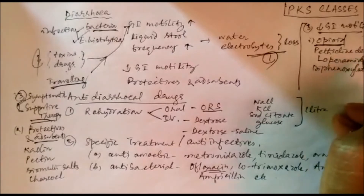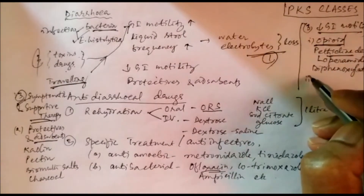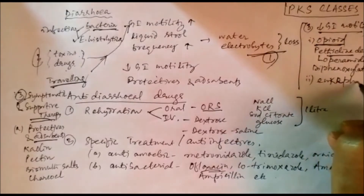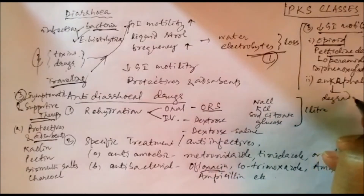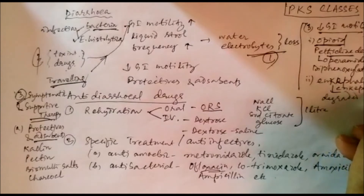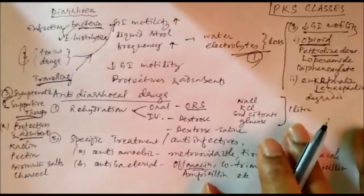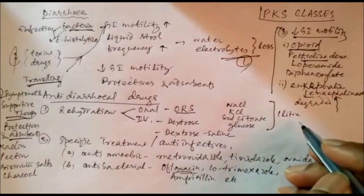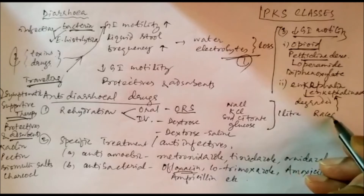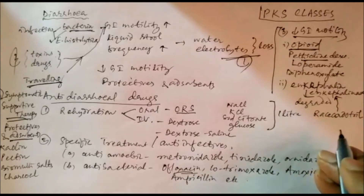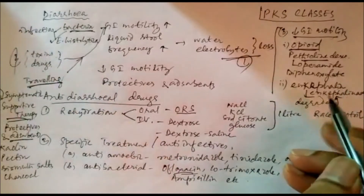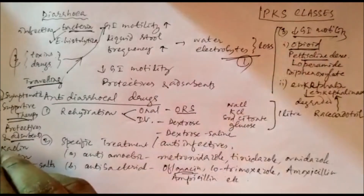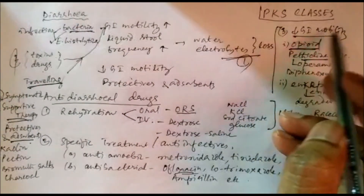Diphenoxylate and loperamide are pethidine derivatives that reduce GI motility. The endogenous opioid peptide enkephalin is degraded by the enzyme enkephalinase, so we can use an enkephalinase inhibitor. An enkephalinase inhibitor — such as racecadotril — can be used as a drug to reduce GI motility.